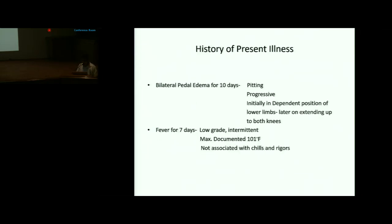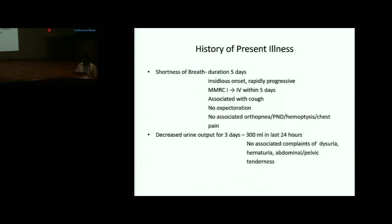The bilateral edema was progressive, initially in the dependent position of the lower limbs, later extending up to bilateral knees. Fever was low-grade, intermittent, with a maximum documented temperature of 101°F, not associated with chills and rigors.